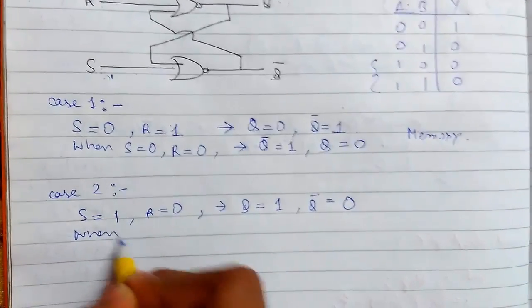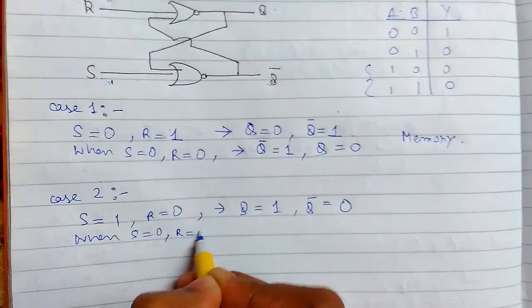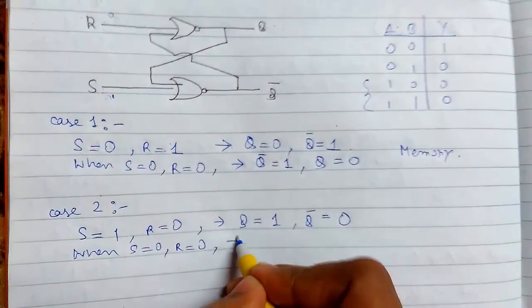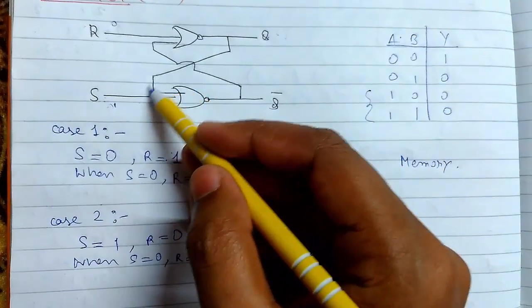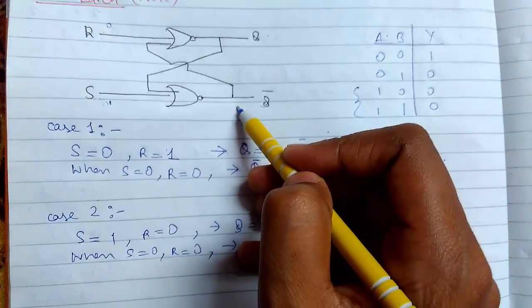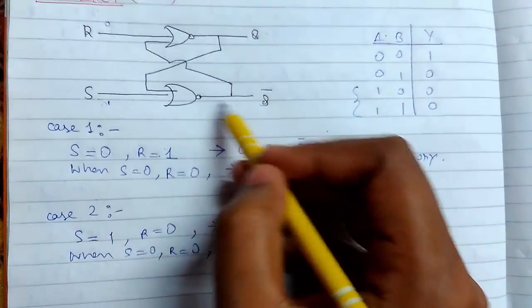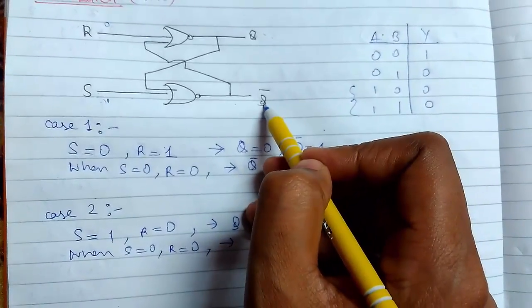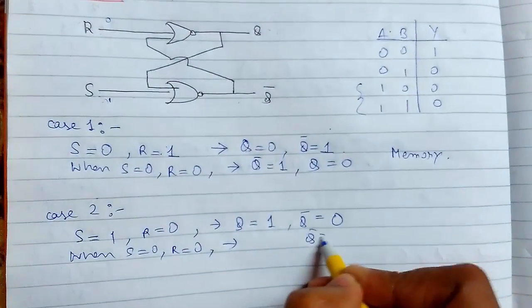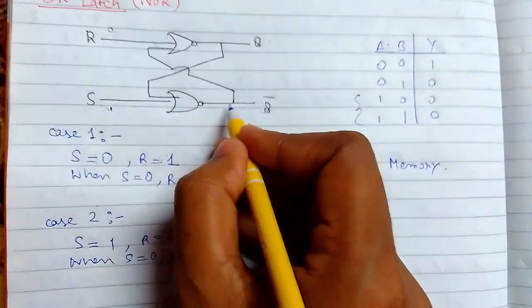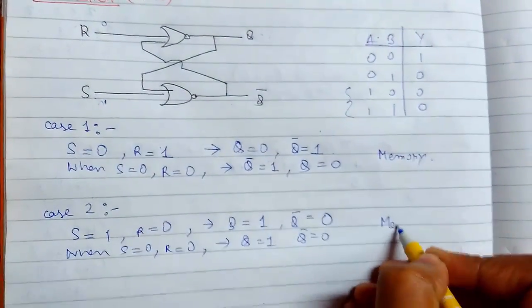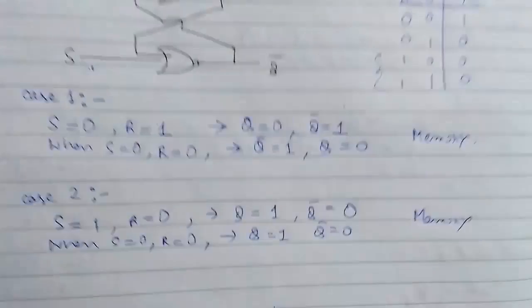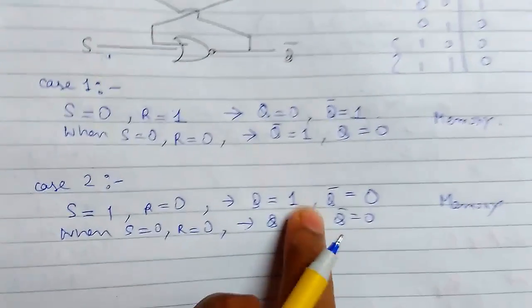Now again we will see what will happen when S is 0 and R is 0. So Q bar is 1, so 1 passed here, 1 and 0, so this will make 1 and 0, it will make 0. Q bar will be 0 and Q bar 0 has passed here, so 0, 0 is 1. So again the memory condition has arrived. Whatever our previous output was, it gets stored, our new output has not been changed.